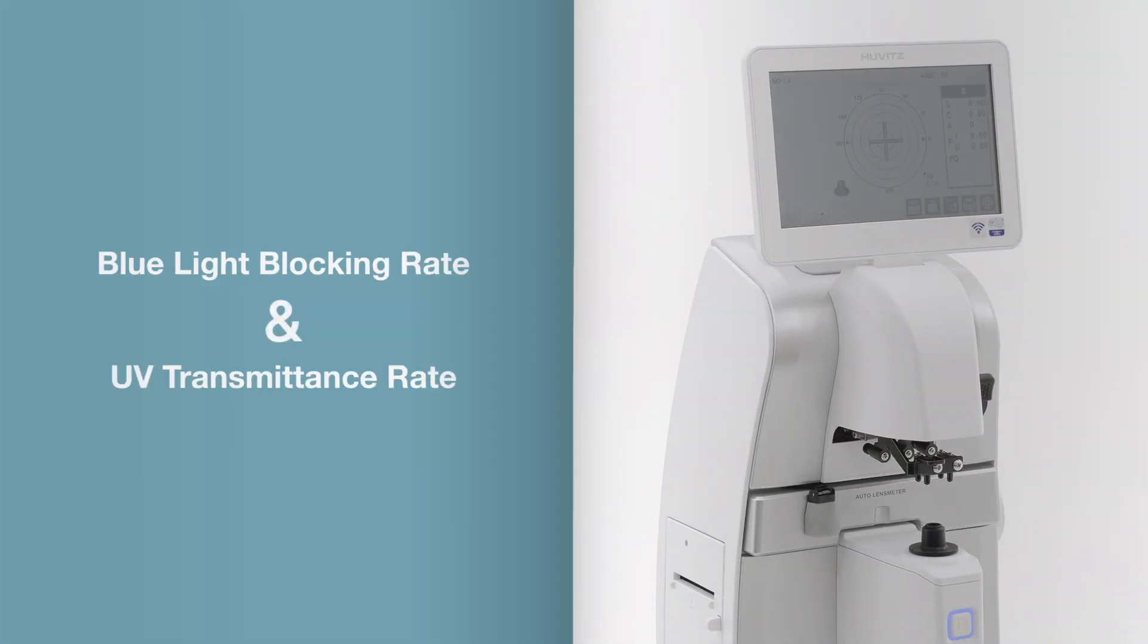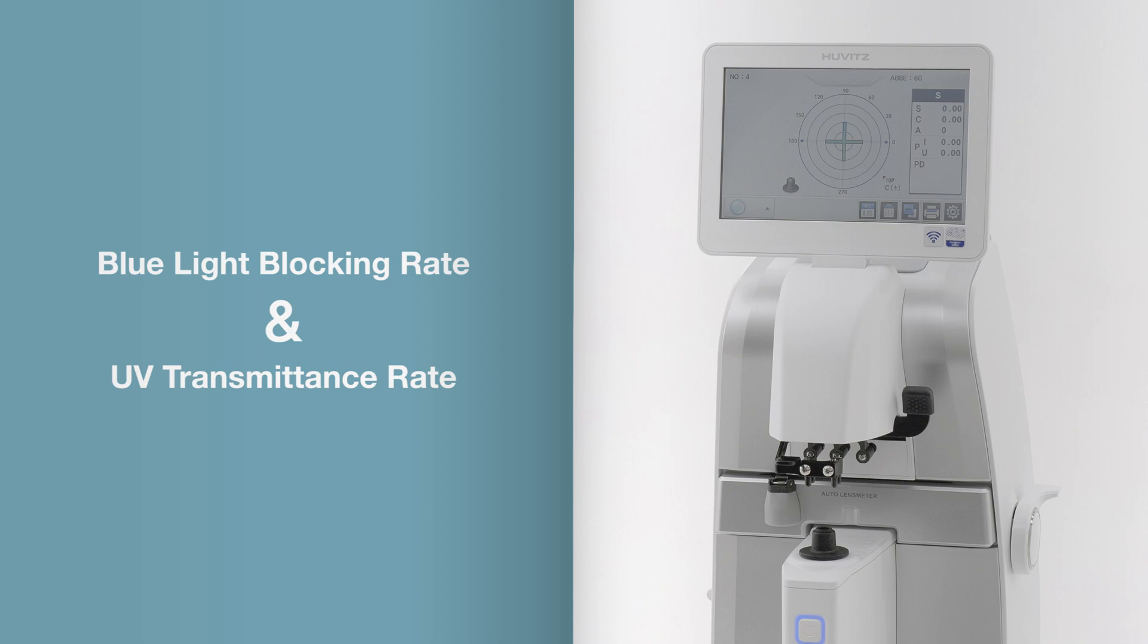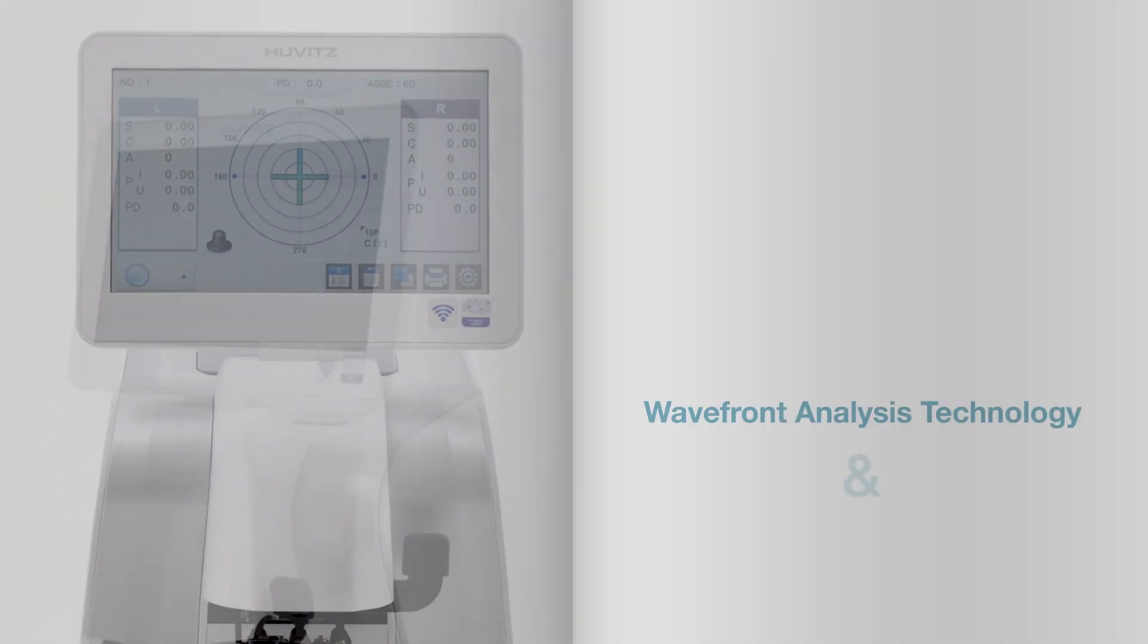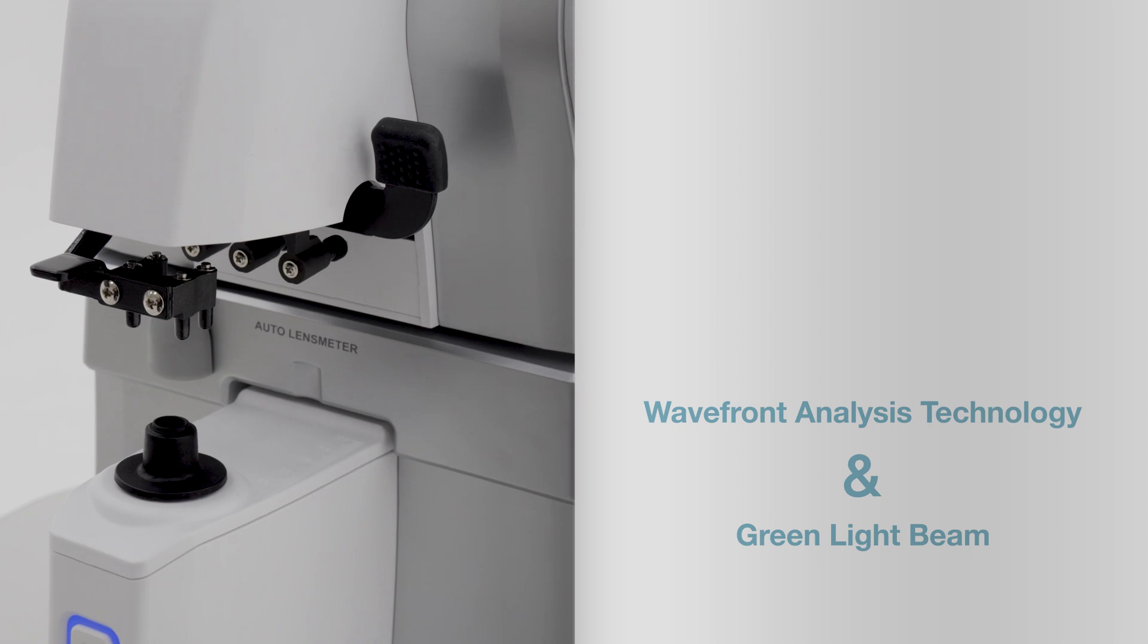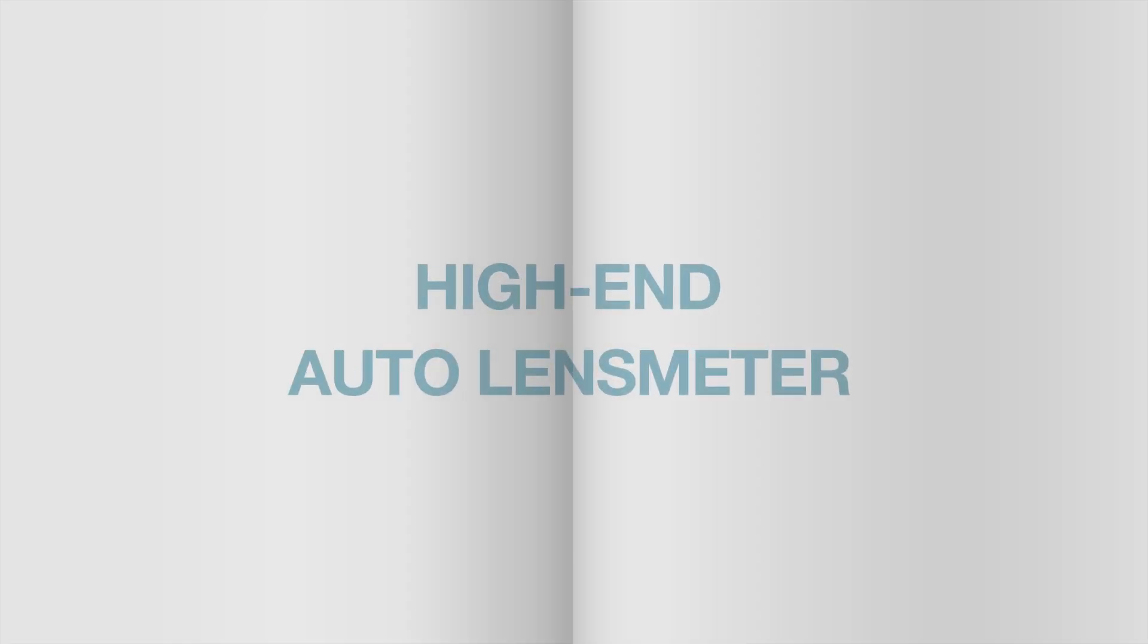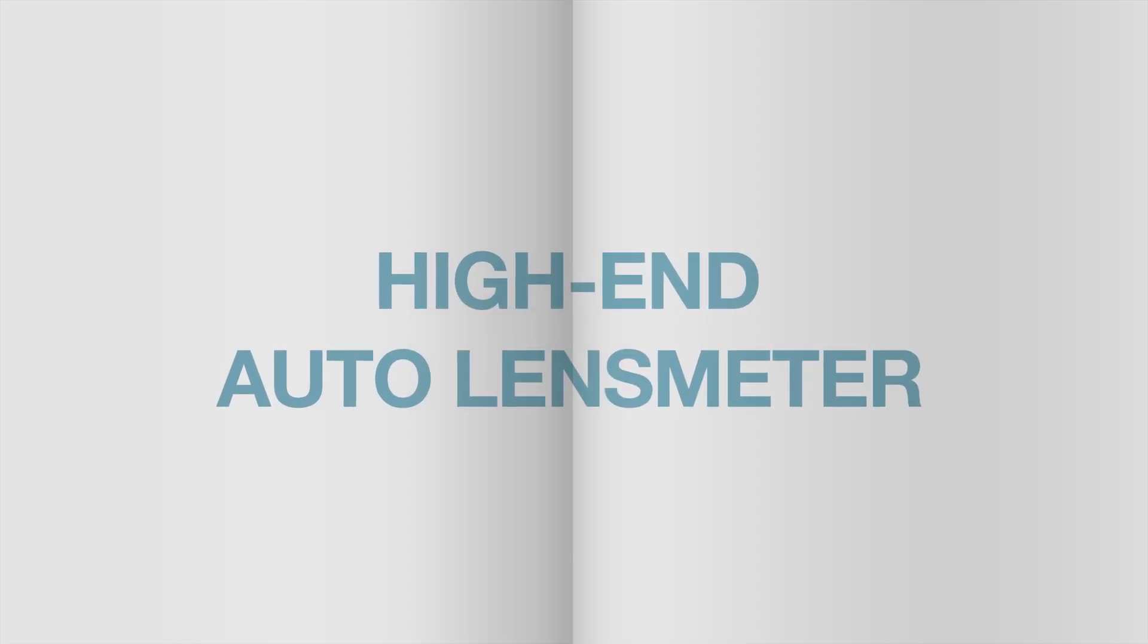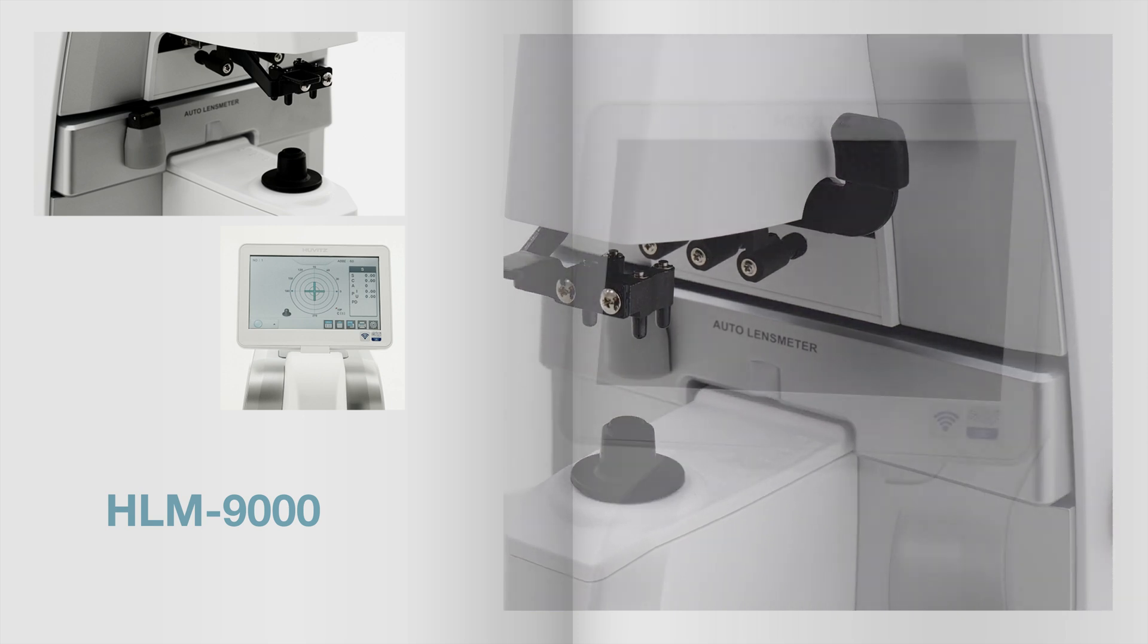Blue light blocking rate and UV transmittance rate can be conveniently measured. While wavefront analysis technology and green light beam are used to accurately measure lens information, this is the high-end auto lens meter, Huwitz HLM 9000.